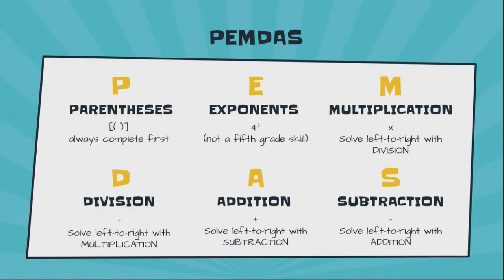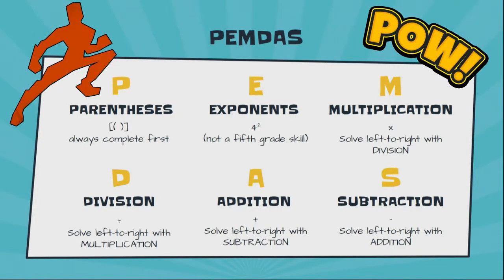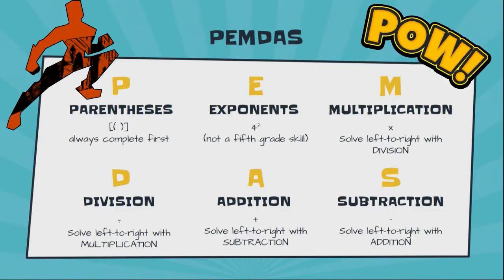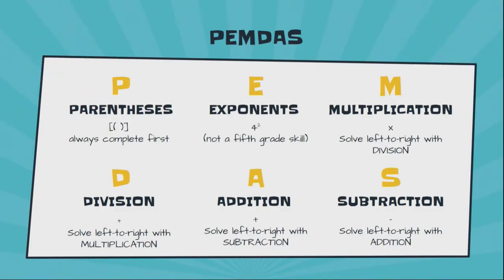M is multiplication. You can see, very important, which I'll talk about more: you will solve multiplication problems left to right with division. Multiplication and division are equal to each other. They just have to be written down in some order, and whoever came up with PEMDAS decided to write them like this.